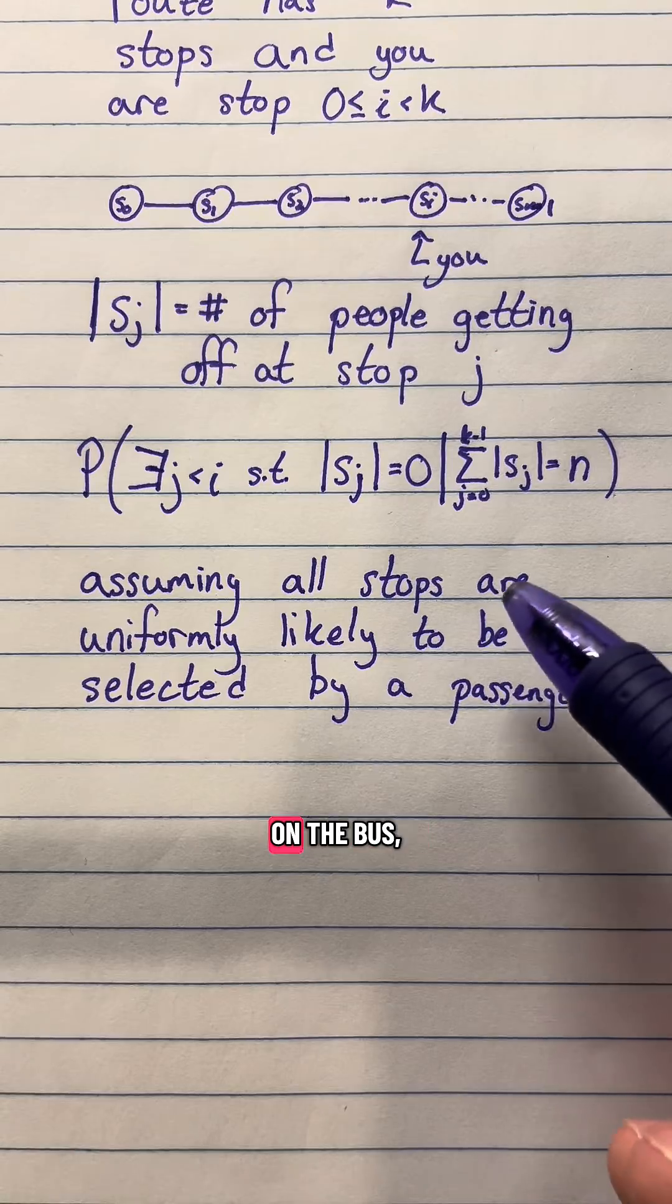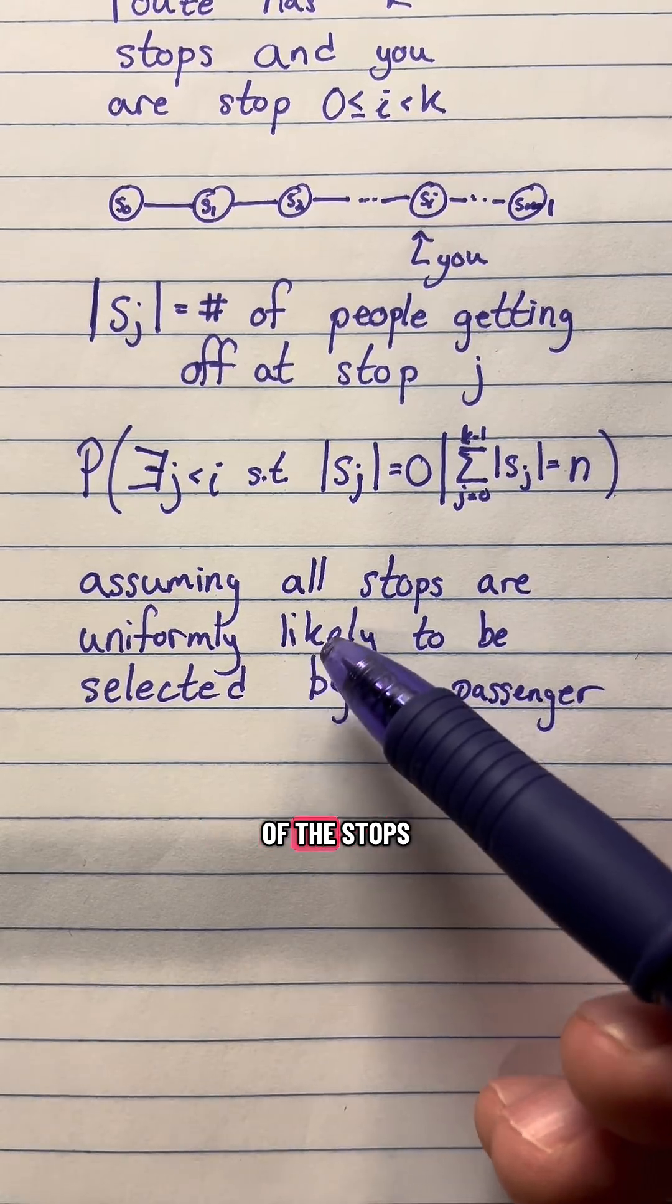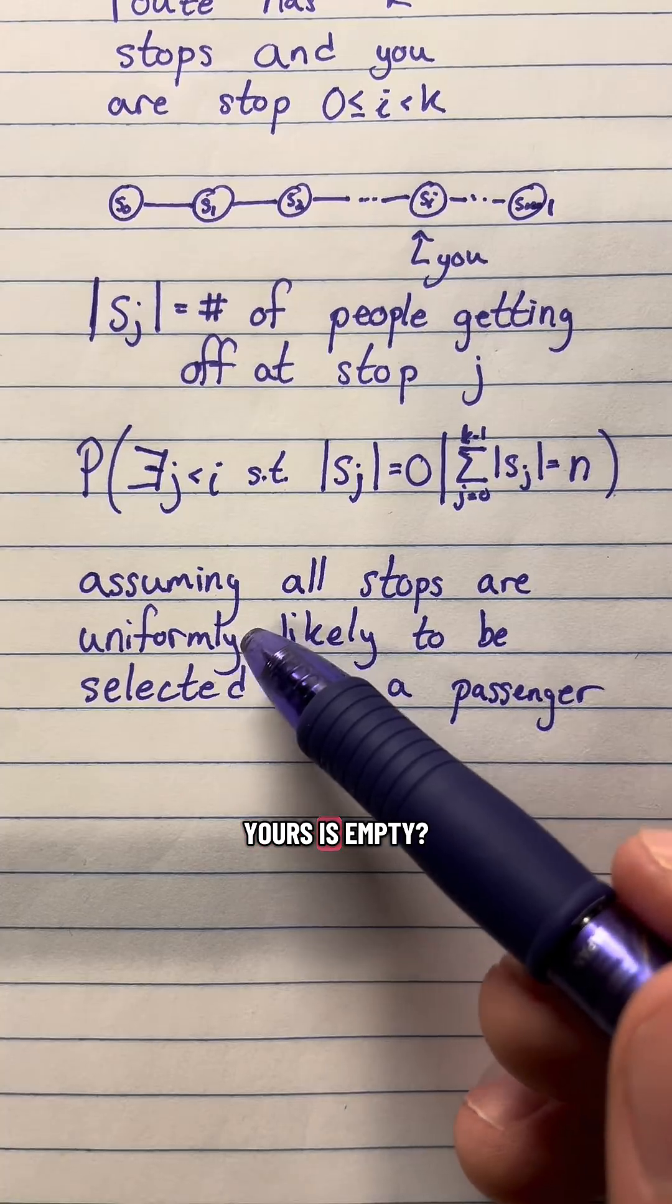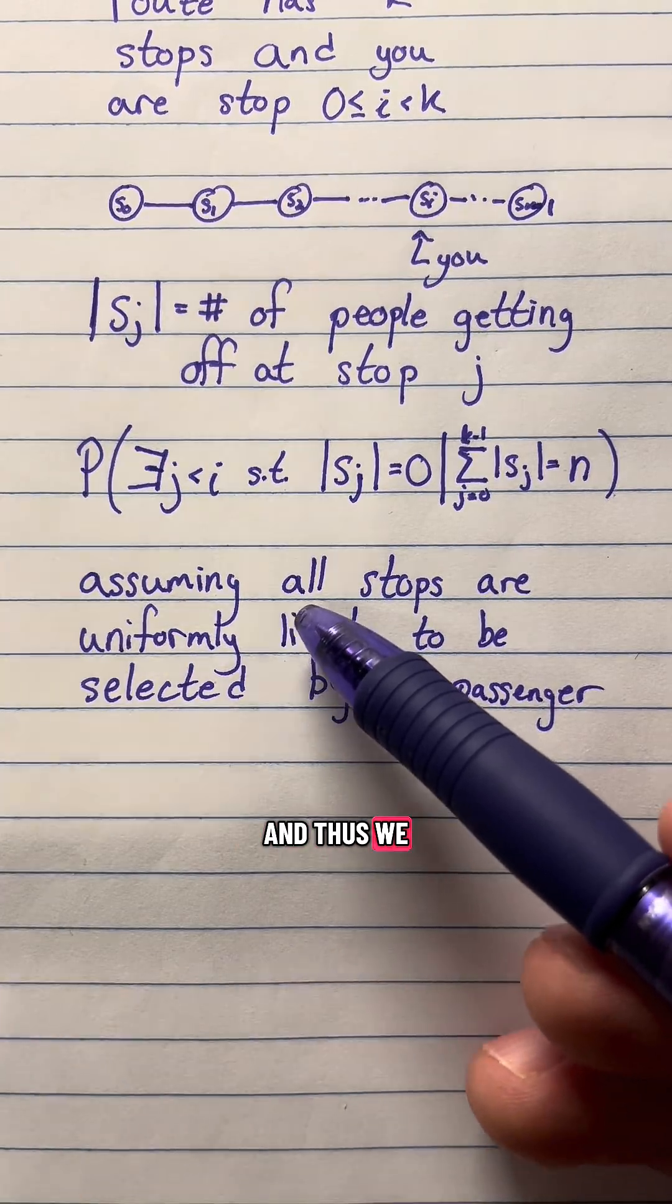So given there are n people on the bus, what is the probability that one of the stops that comes before yours is empty, nobody will get off at it, and thus we can skip it.